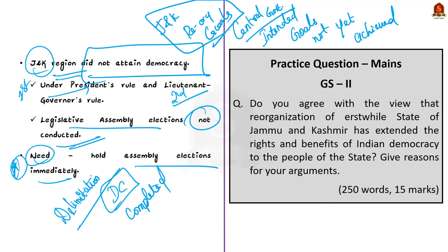For prelims, you need to know the Jammu and Kashmir Reorganization Act's year, how it is reorganized, and that it was reorganized into two Union Territories — one with a legislative assembly and one without. For mains examination, you might be questioned about the effects of this reorganization act and what has been achieved in these three years after reorganization, and you can utilize the points discussed today. This is a very important topic for mains, which is why it was decoded in a detailed manner.